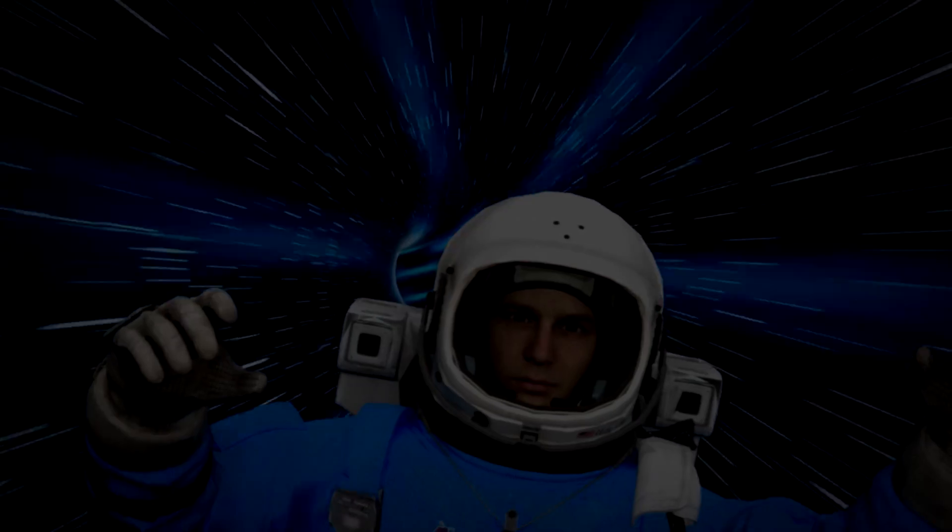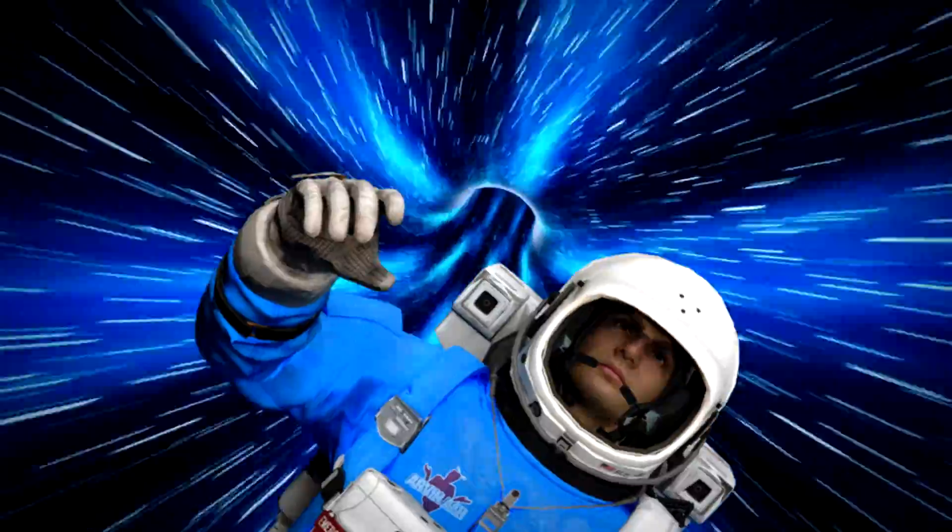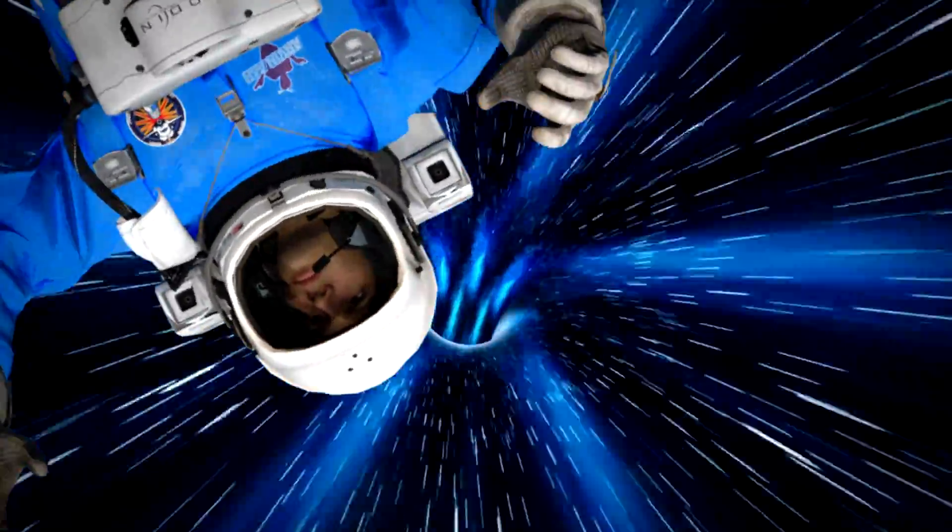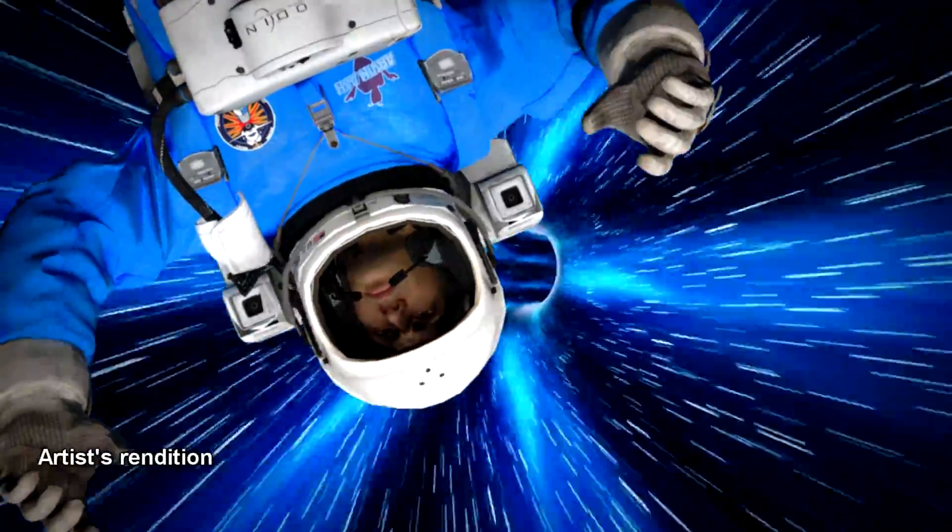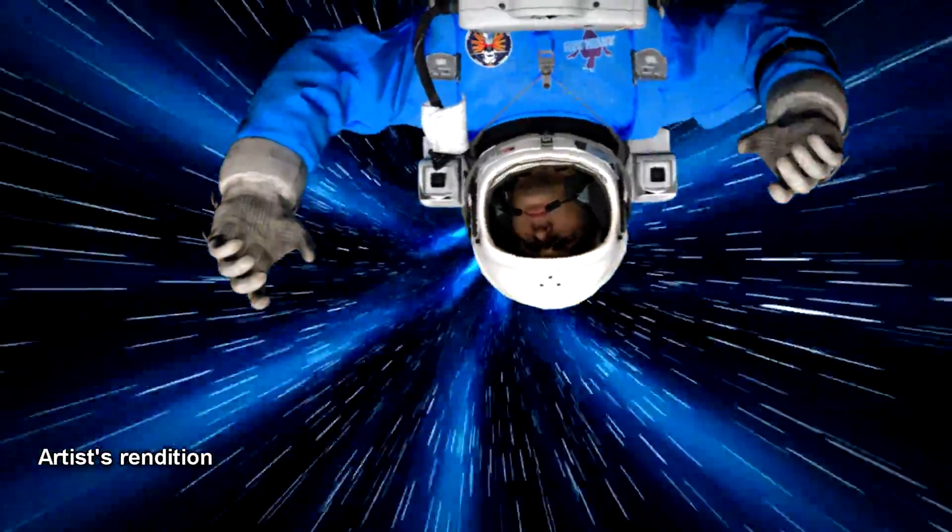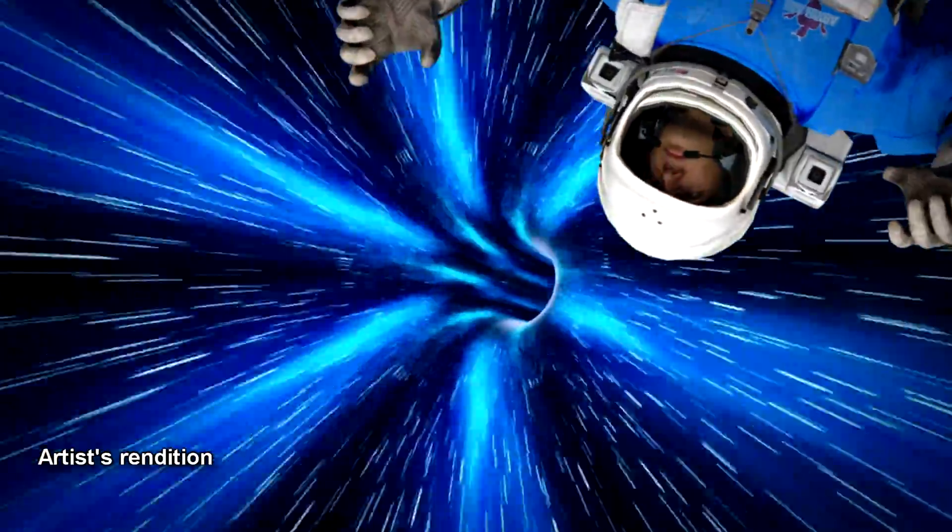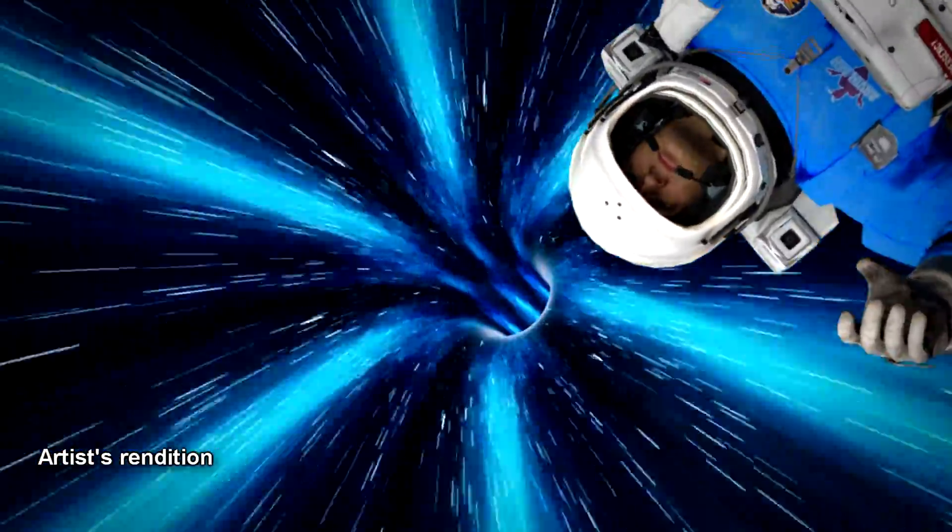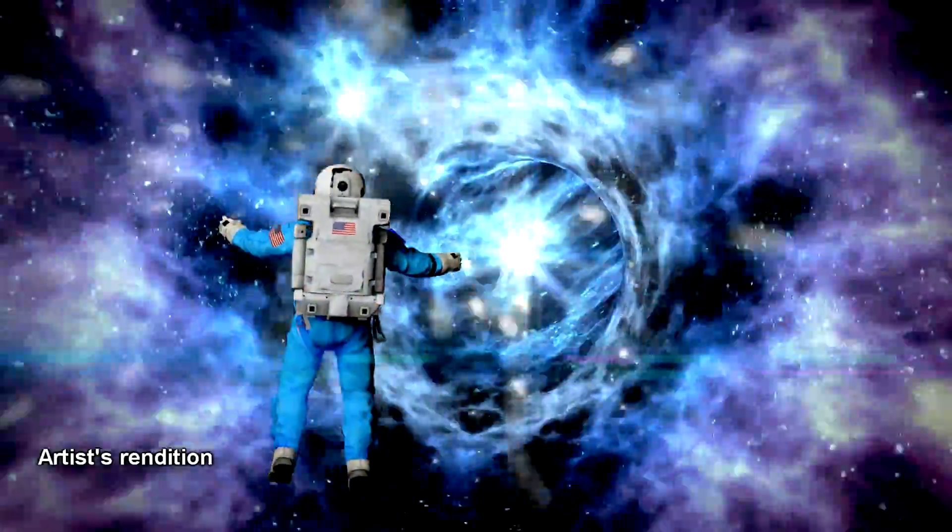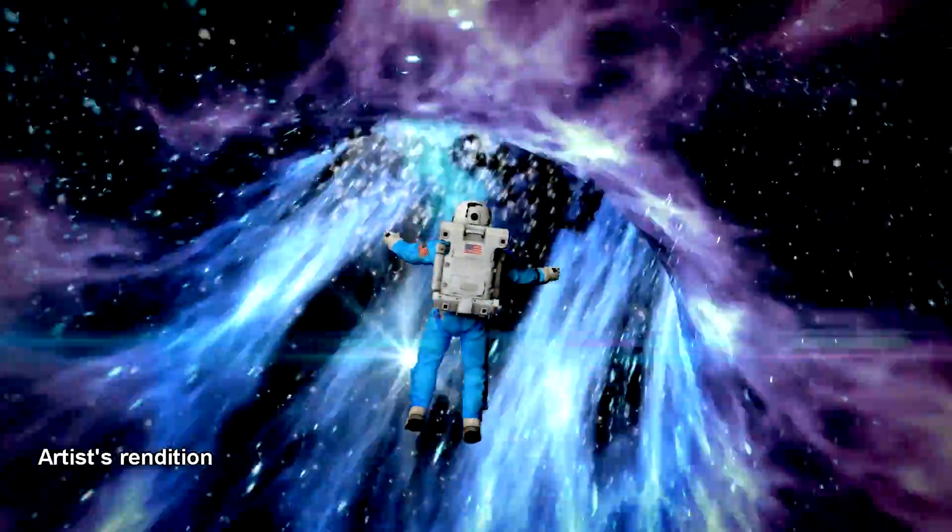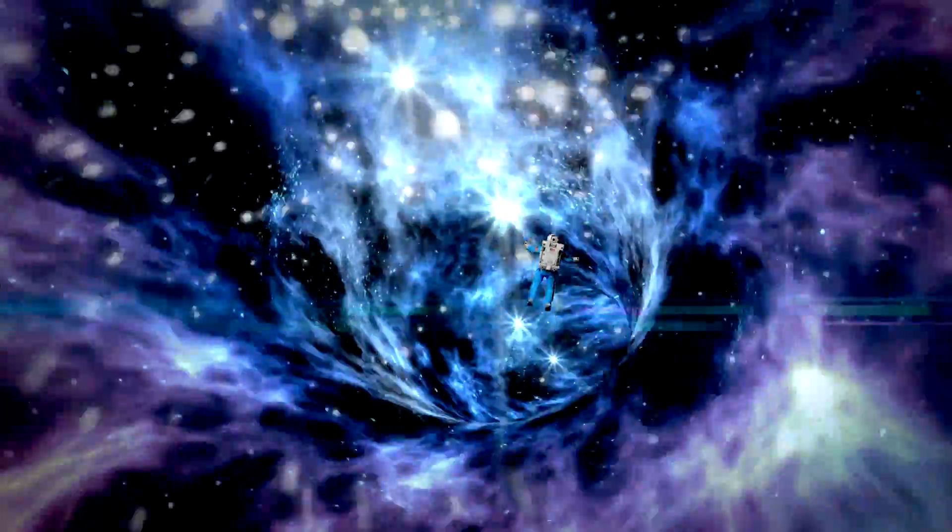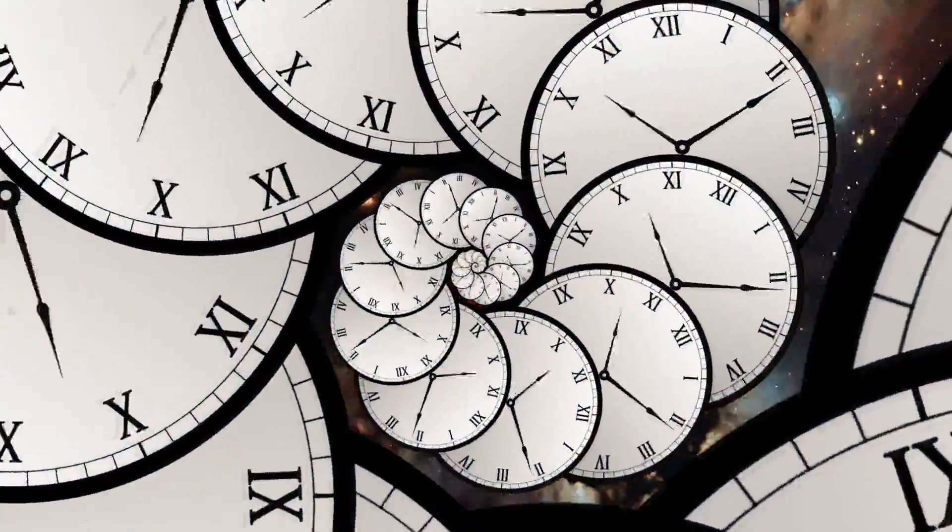He experiences a very weird sensation though. He still has a sense of upness and downness inside the black hole, but every direction feels downward. Even looking up feels like looking down. Space-time is bent so drastically towards the singularity that there is literally nowhere to go but towards the singularity. If Adam tries to fire his rockets to go back up towards the event horizon where he entered, he will actually be accelerating towards the singularity faster. Time becomes space inside the black hole.